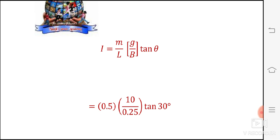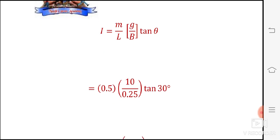Values plug in - the value of m by L is 0.5, m by L is the mass per unit length. Value of g is 10, value of b is 0.25, value of theta is 30 degree.